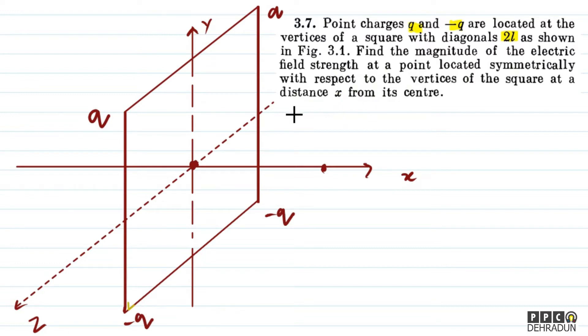So, we have a point here at distance x from the center, and this point is symmetric with respect to all the vertices.